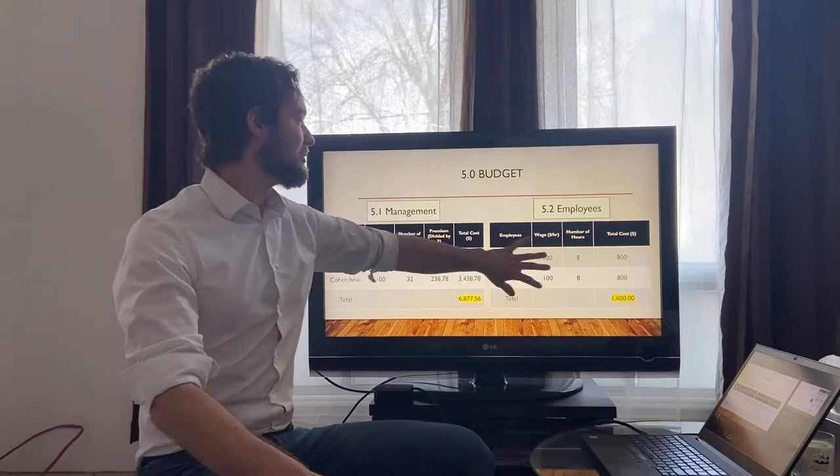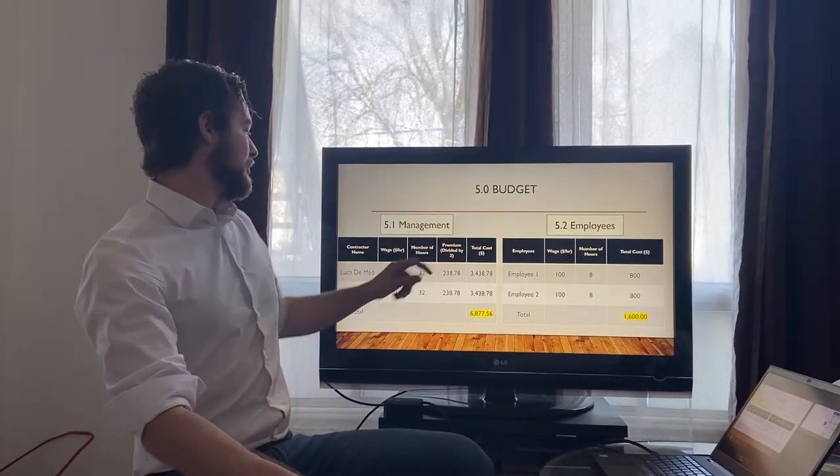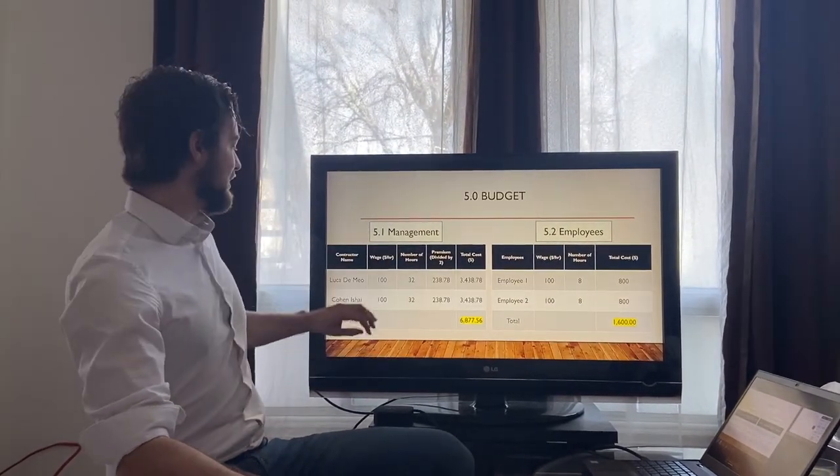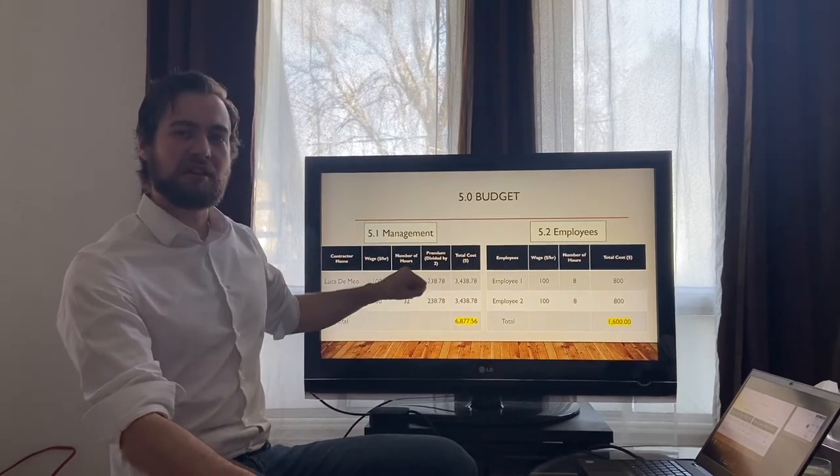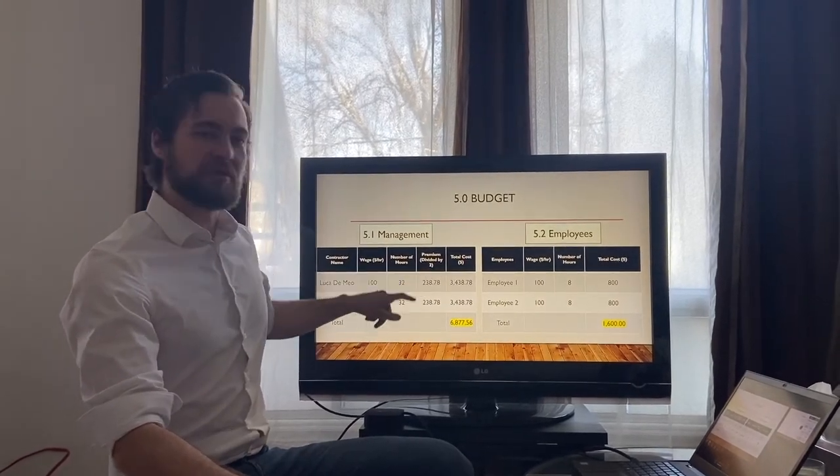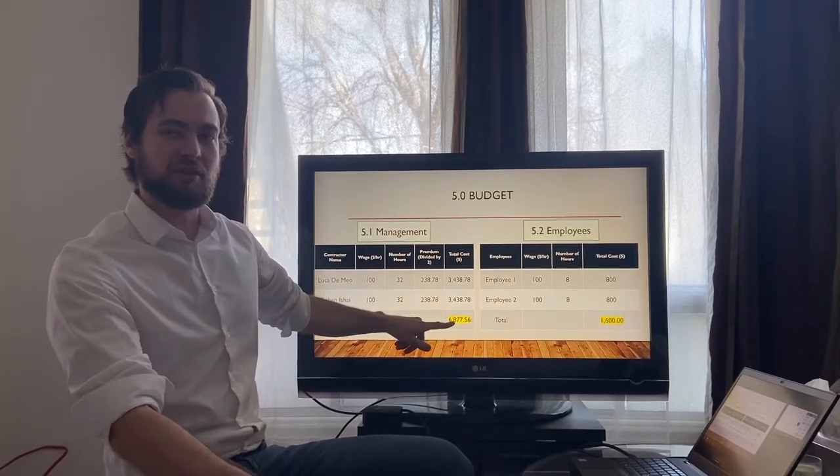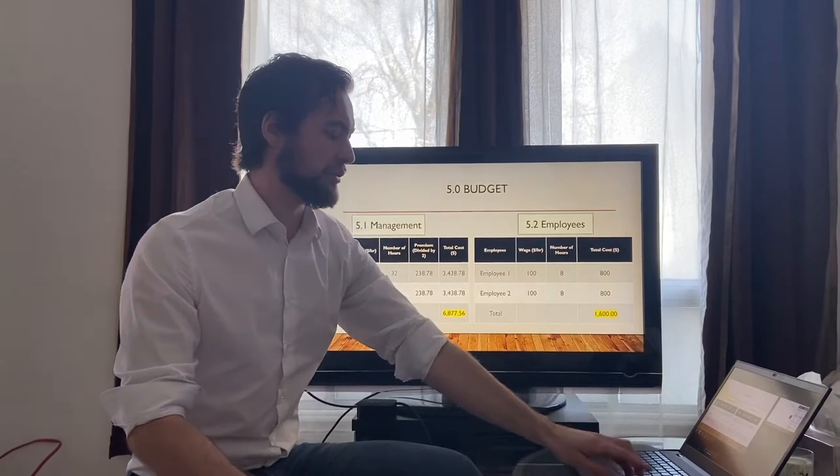So for the budget section, we've got two tables here that are management and the employees to be hired. The wage we plan on paying ourselves $100 an hour. Most of the work will be allocated to myself and my partner of 32 hours each. We also intend on paying ourselves a premium, which will be 20% of the materials to be purchased. So we're looking at a total of $6,900 for myself and my partner and an extra $1,600 from the employees.